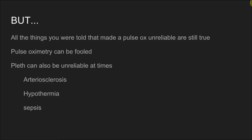All the things you were told that made pulse ox unreliable are still true. Patients in shock, hypothermic patients, septic patients — because of the vasodilation — those things can still make pulse ox unreliable in the way we think about it. Pulse ox only measures bound hemoglobin. In terms of the actual oximetry value, it's just measuring how bound the hemoglobin is. It has no way of knowing whether the hemoglobin is so tightly bound to oxygen that it's not releasing it to the tissues.